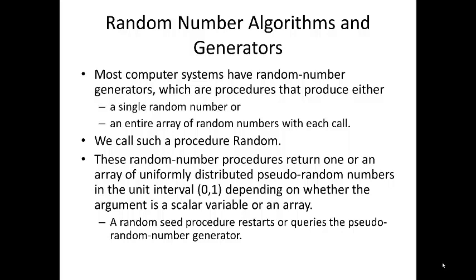For example, random number generators are contained in mathematical software systems such as MATLAB, Maple, Mathematica, C, C++, and C Sharp, and many other languages.